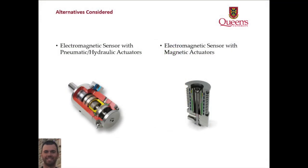The final two designs were systems that did away with cams altogether. The first used an electromagnetic rotational position sensor coupled with hydraulic or pneumatic actuators. This allows for incredible variability and also removes a number of bulky rotating parts. The second camshaft solution is very similar to the first, but instead uses magnetic gate actuators. This has more or less the same benefits as the hydraulic or pneumatic solution, but is slightly heavier.